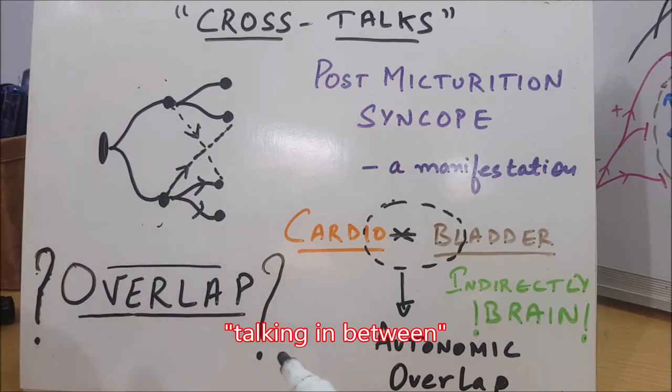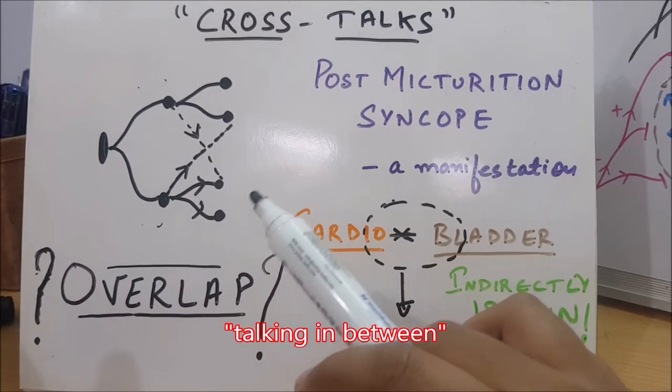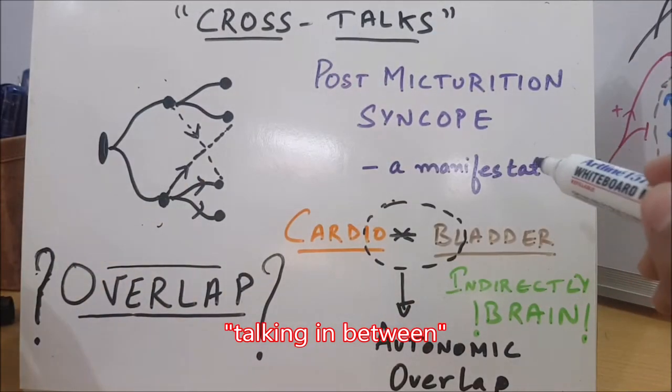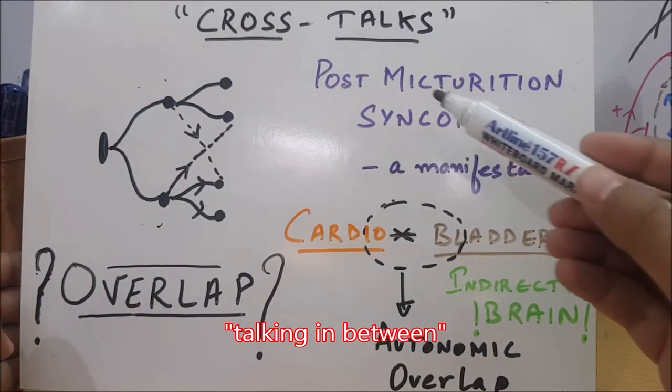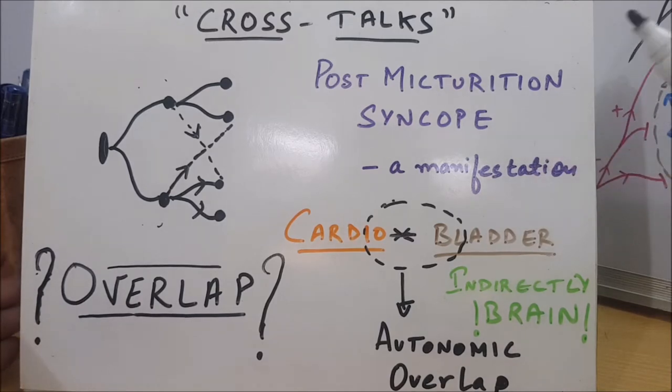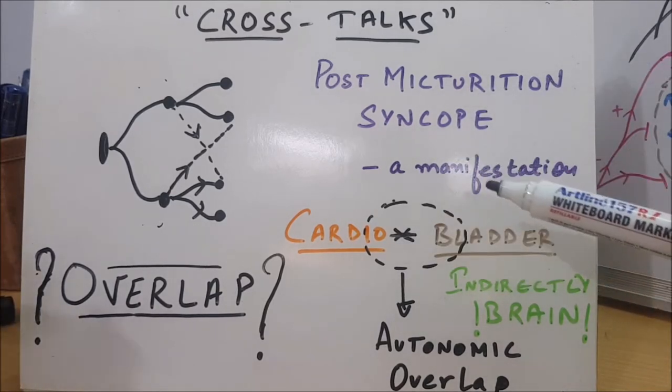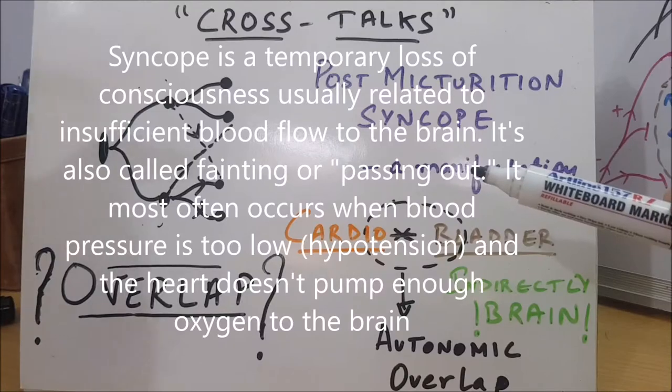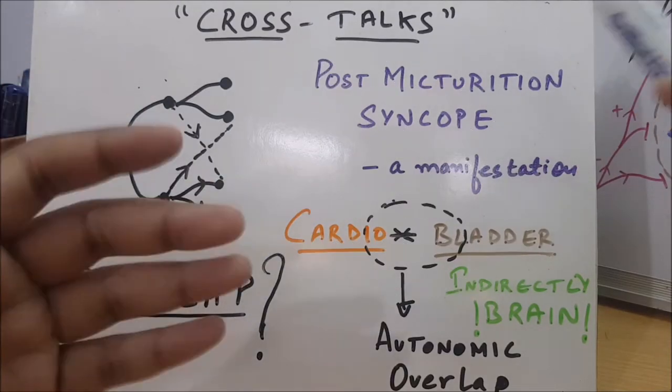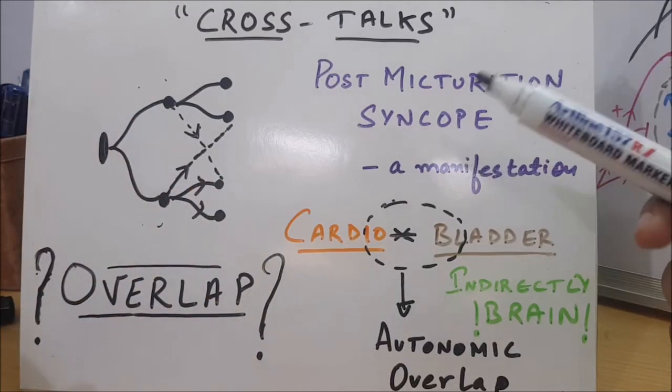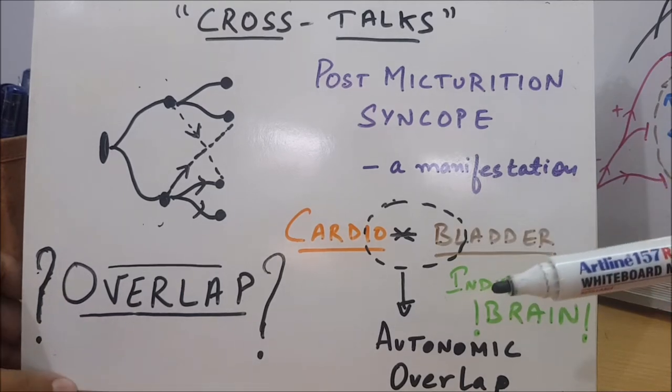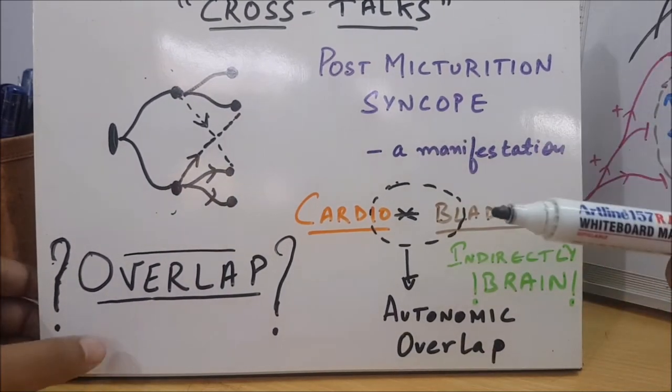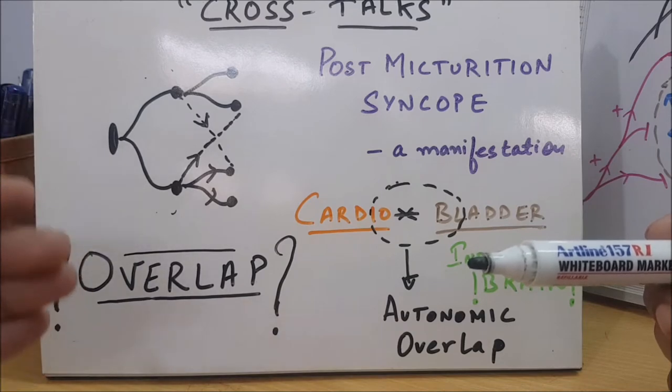Now let us translate this into our body. Post-micturition syncope—it's syncope—is a manifestation of those cross-talks, of cross-talks of autonomic nervous system overlaps in higher parts, in higher centers, that is in brainstem or in hypothalamus.